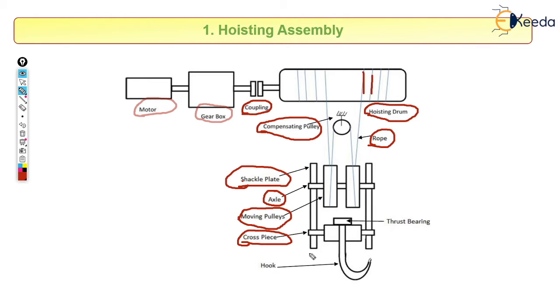The cross space is connected to a shackle plate, and on cross space we have one more factor that is hook which is actually used to lift the load, and at the end there is a thrust bearing.